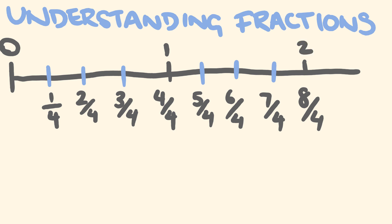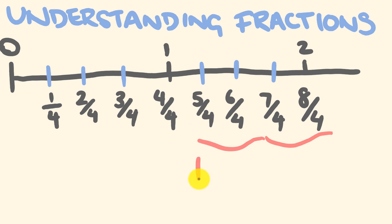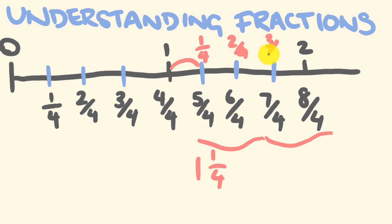So what we have here is a whole bunch of proper fractions from zero to one, and then a whole bunch of improper fractions from one onwards. We can also change those improper fractions across to mixed numbers. Five divided by four is one with one left over — one out of four — so that's one and a quarter. Then we have one and two quarters, and one and three quarters. Seven divided by four is one with three left over — three over four — so one and three quarters.